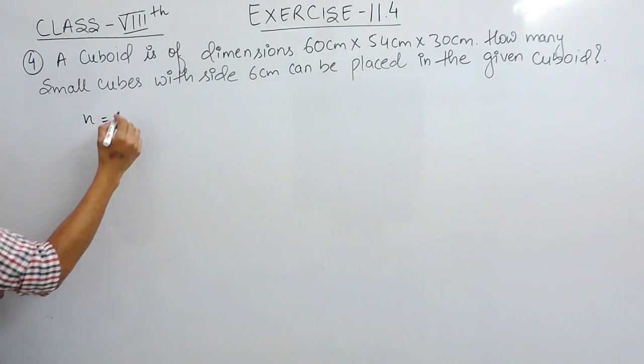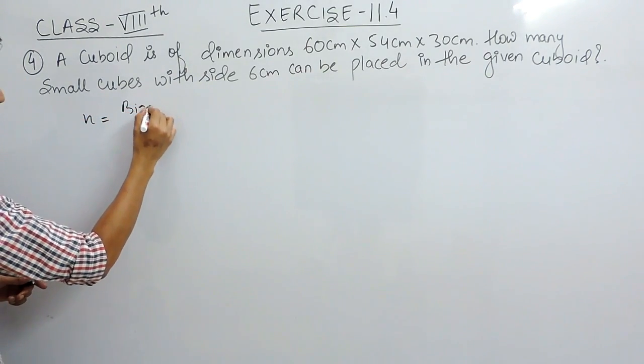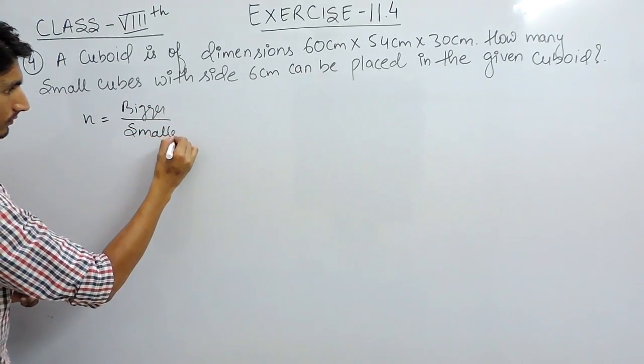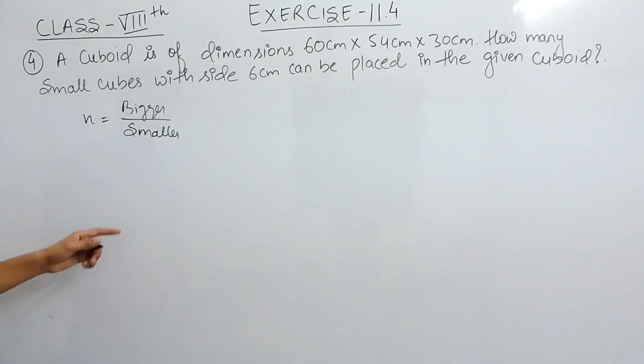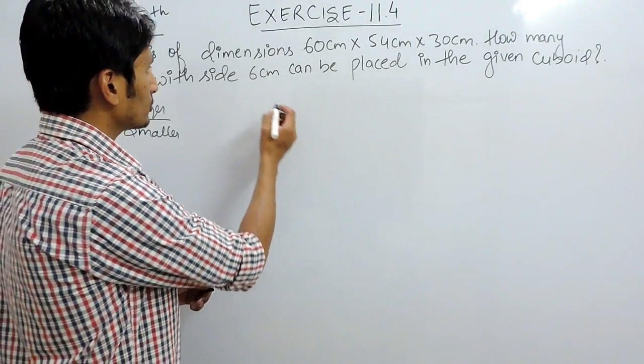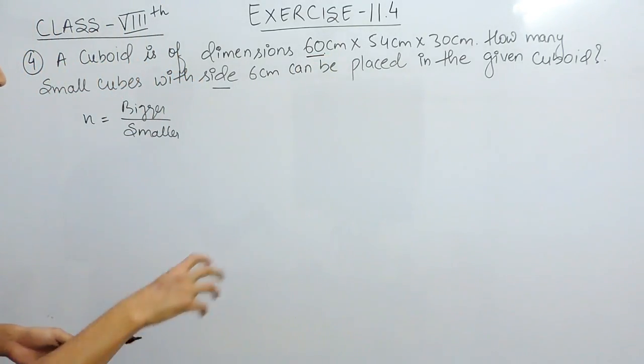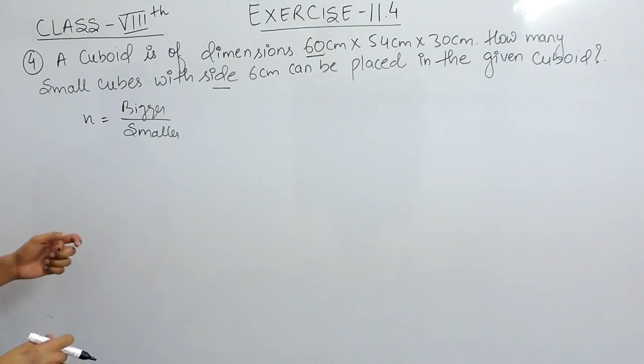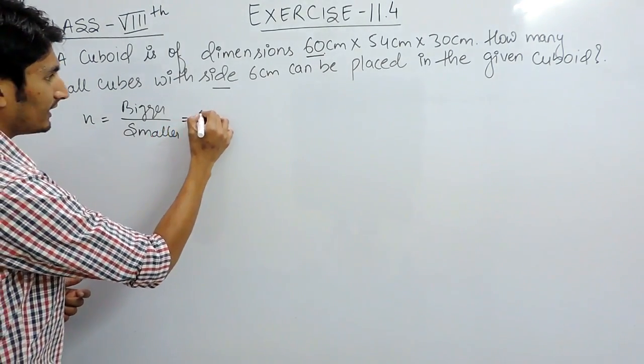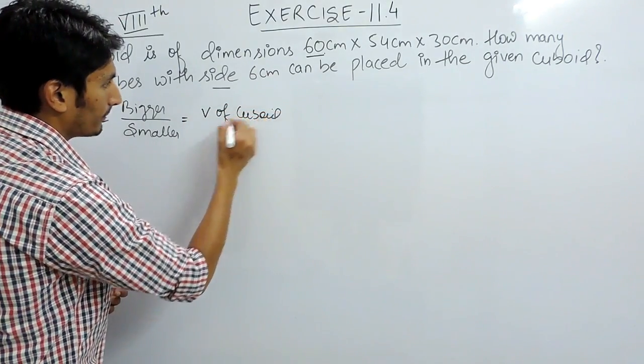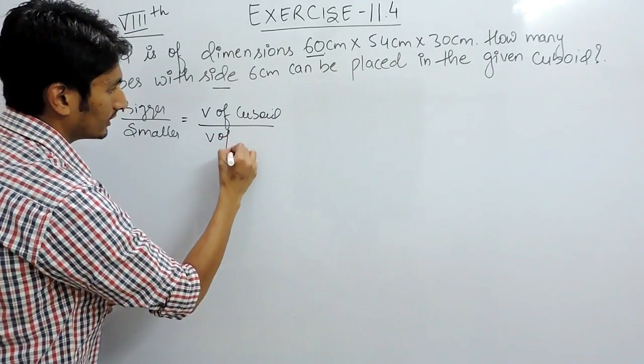I have already told you, whenever you have to find the number, you divide bigger by smaller. In this case, you put small cubes inside a bigger cuboid. Clearly, you have to fill all the space inside the cuboid, so you are talking about volume. If we divide the volume of the cuboid by the volume of the cube, we will get our answer, and this formula is derived from an example.